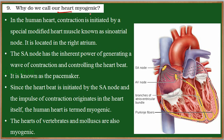Why do we call our heart a myogenic heart? Like nerves, even the cardiac muscle can generate an electrical impulse, and this electrical impulse helps in contraction and relaxation. This impulse carries the message to the cardiac muscles to contract and relax. These impulses are generated in the specialized cardiac muscles of the heart.